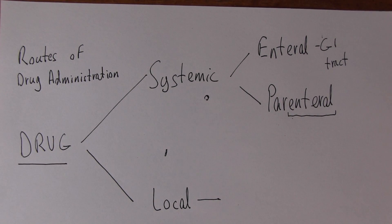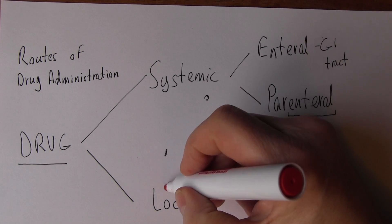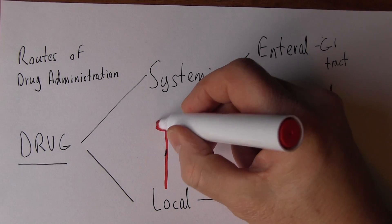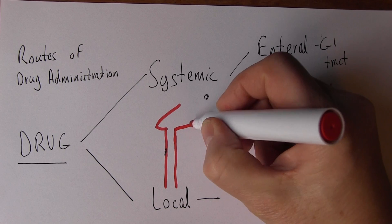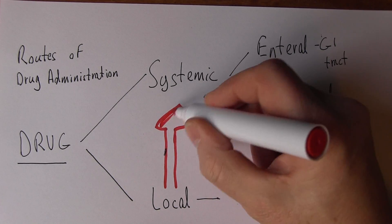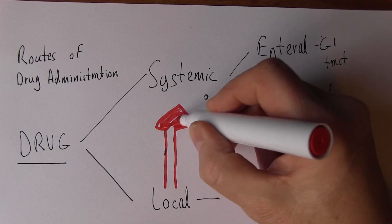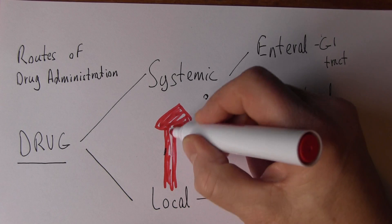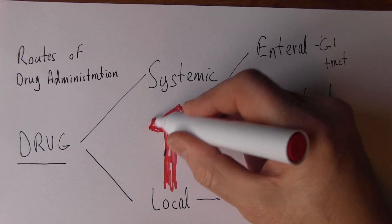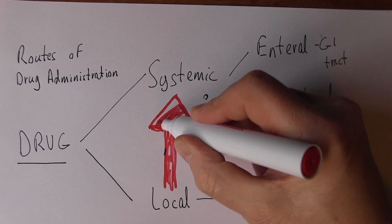We've looked at systemic versus local, but we've also noted—and this is very important—that when we give drugs locally, there is the potential for systemic absorption and systemic effects. We do need to take account of that because these systemic effects may be wanted, but there again, they may be unwanted systemic effects as well.